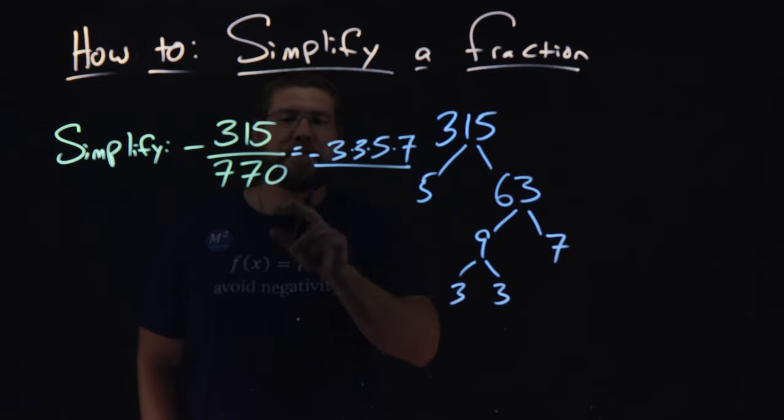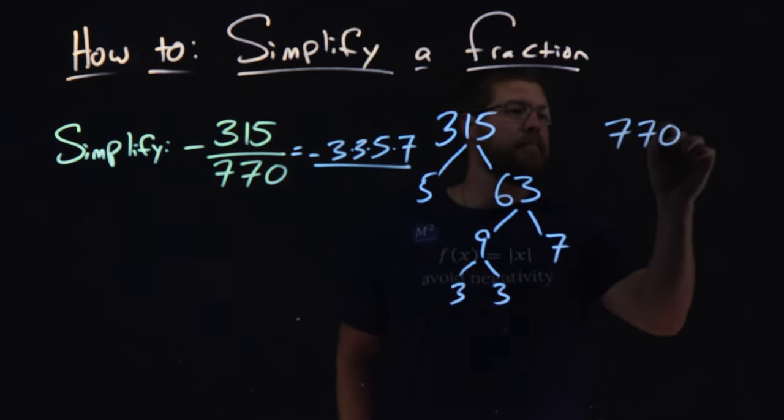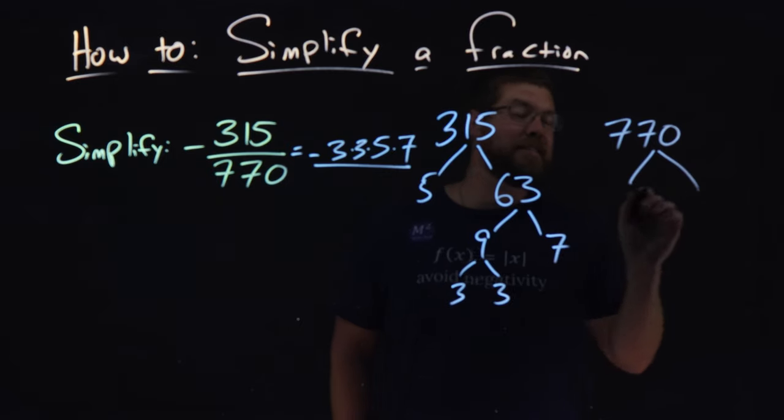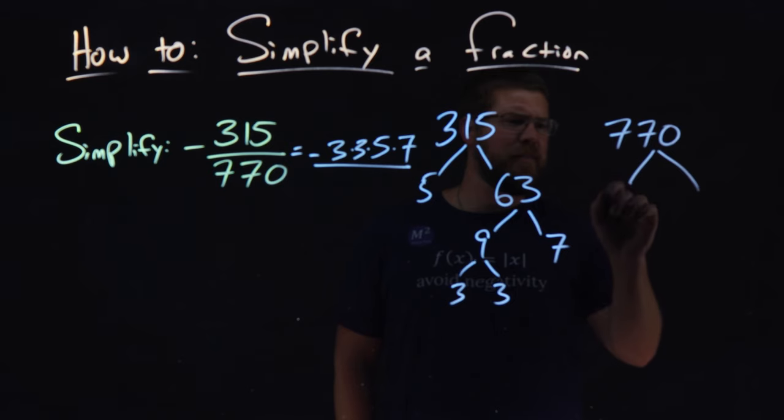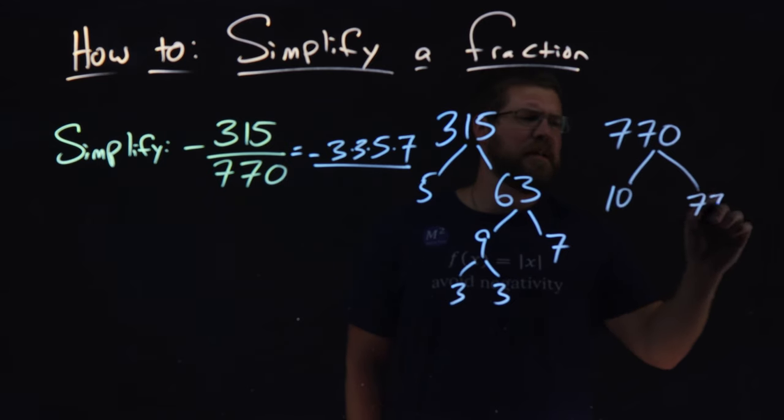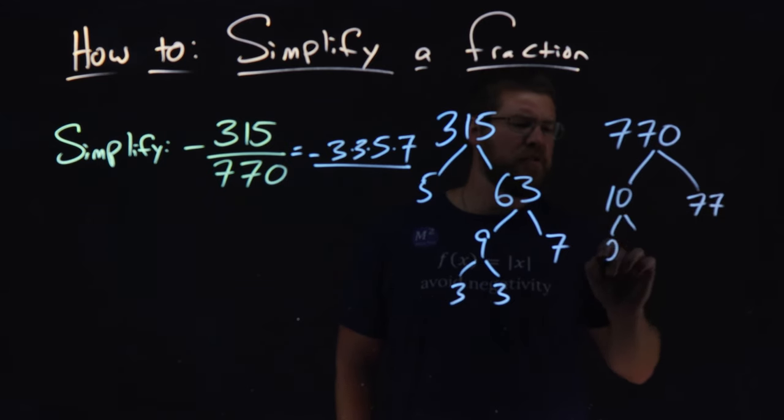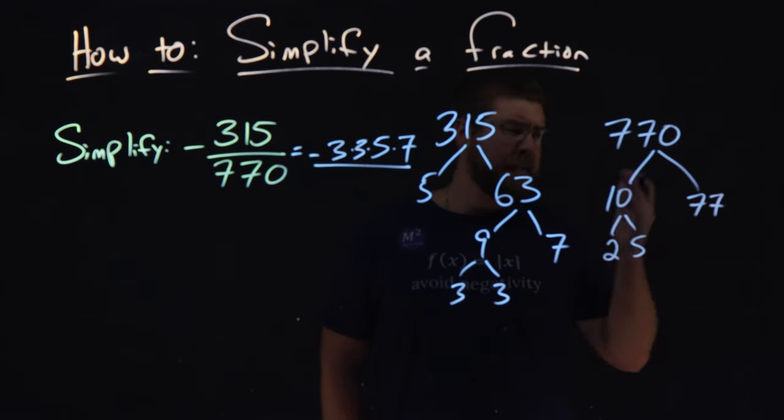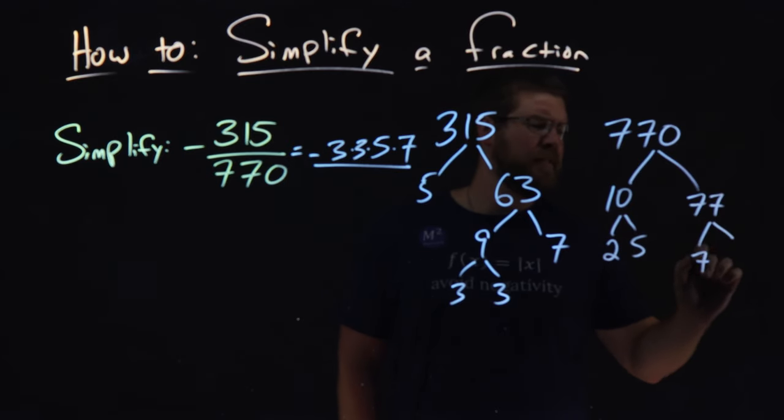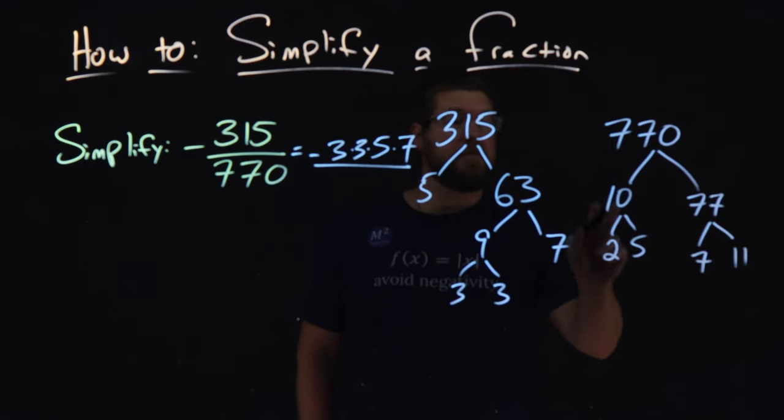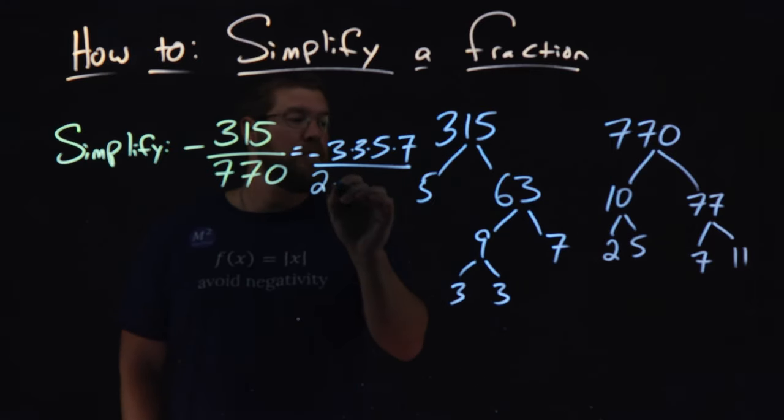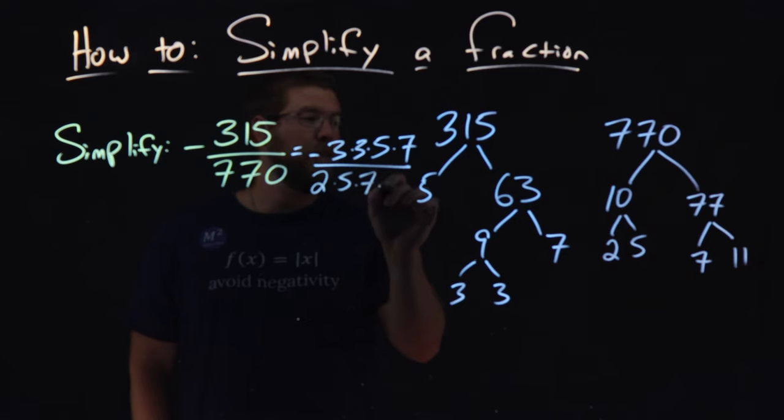Now let's do the same thing with the denominator, 770. Well, 770 breaks down to be, you can guess that 10 goes into it, right? 10 times 77. 10 is 2 times 5, and 77 is 7 times 11. So the prime numbers multiplied for 770 is 2 times 5 times 7 times 11.